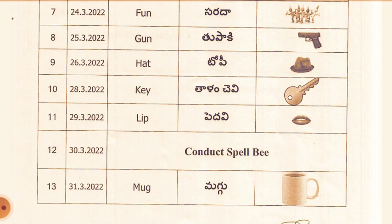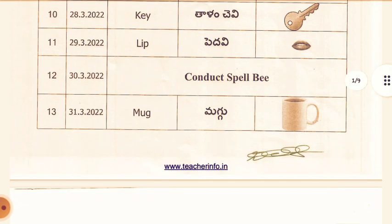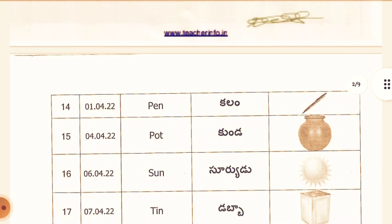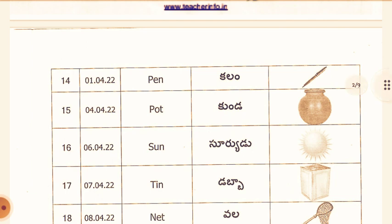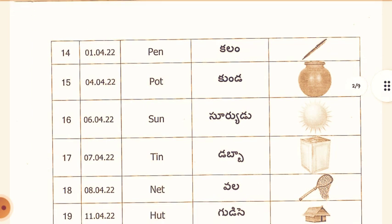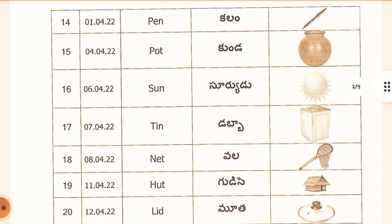31st March: Mug. April 1st: Pen. Telugu meaning: Column. 4th April: Pot. Telugu meaning: Kunda. 6th April: Sun. Telugu meaning: Sourjidu. 7th April: Tin. Telugu meaning: Dubba. 8th April: Net. Telugu meaning: Vala.